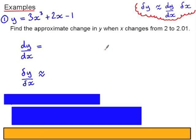We'll work through some examples so you can see this small change formula in action. Our first example is a function y equals 3x cubed plus 2x take 1, and we want the approximate change in y when x changes from 2 to 2.01. So we can differentiate the function